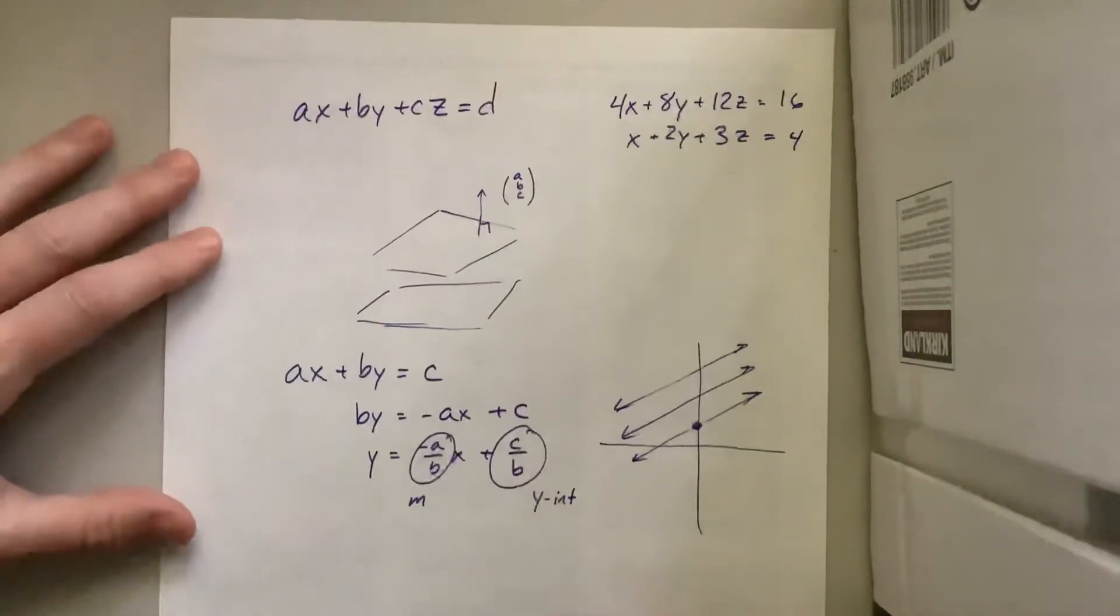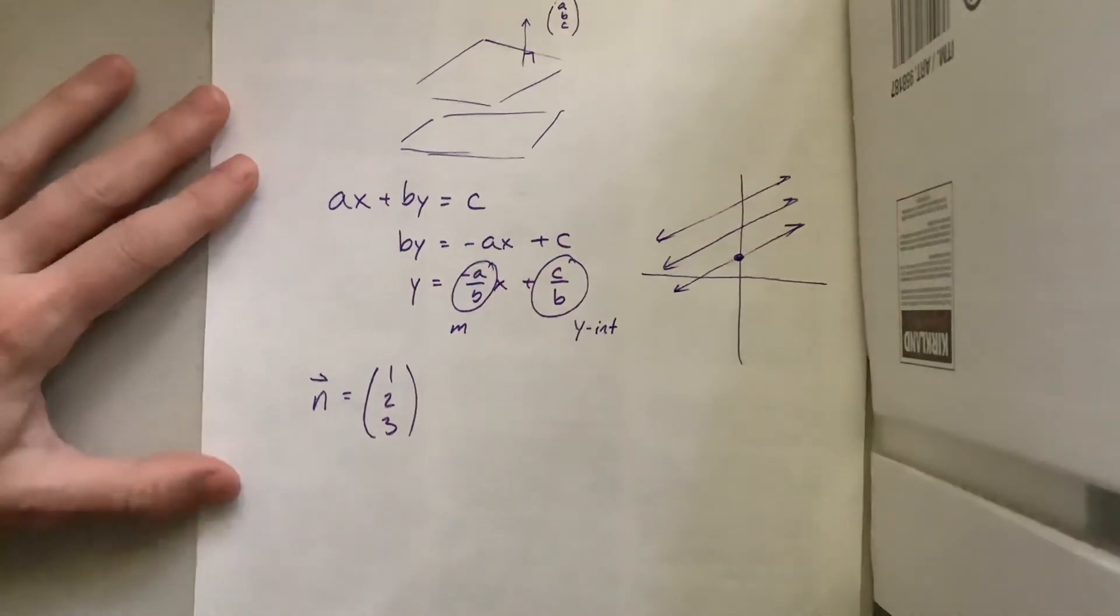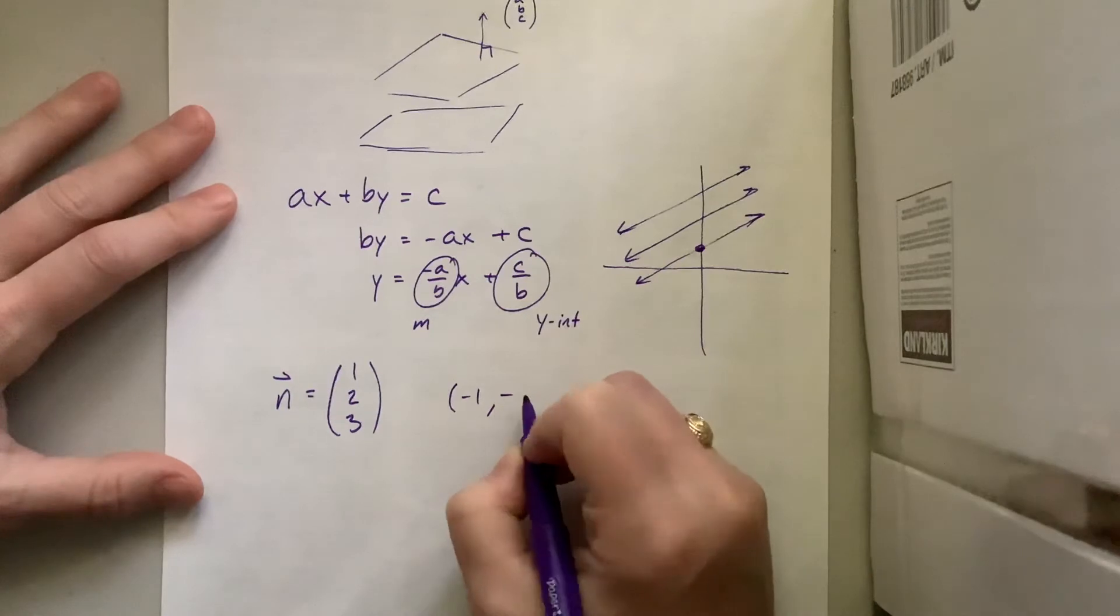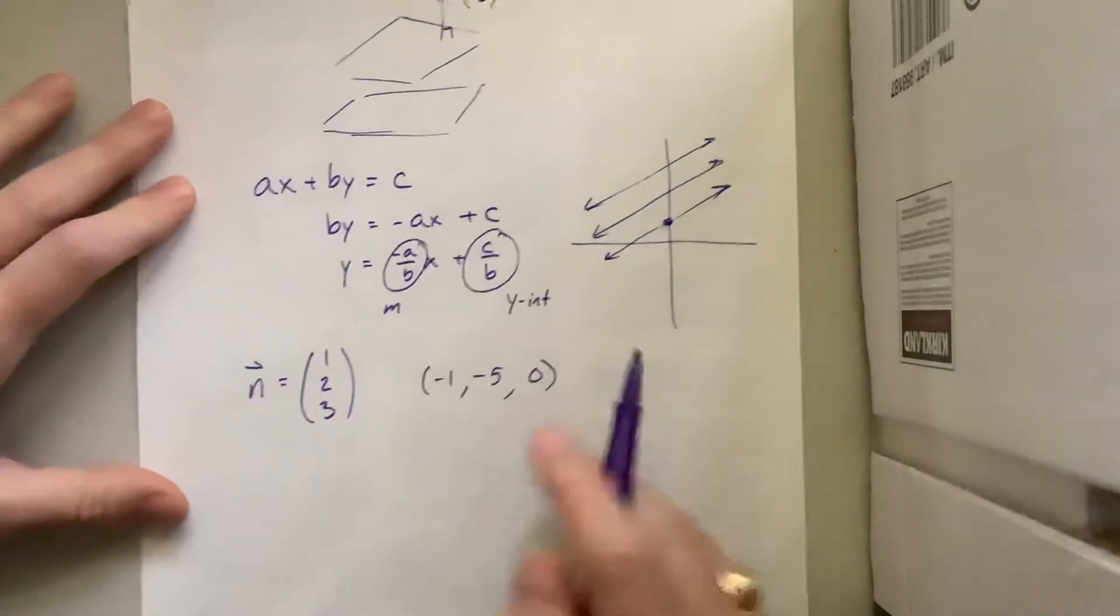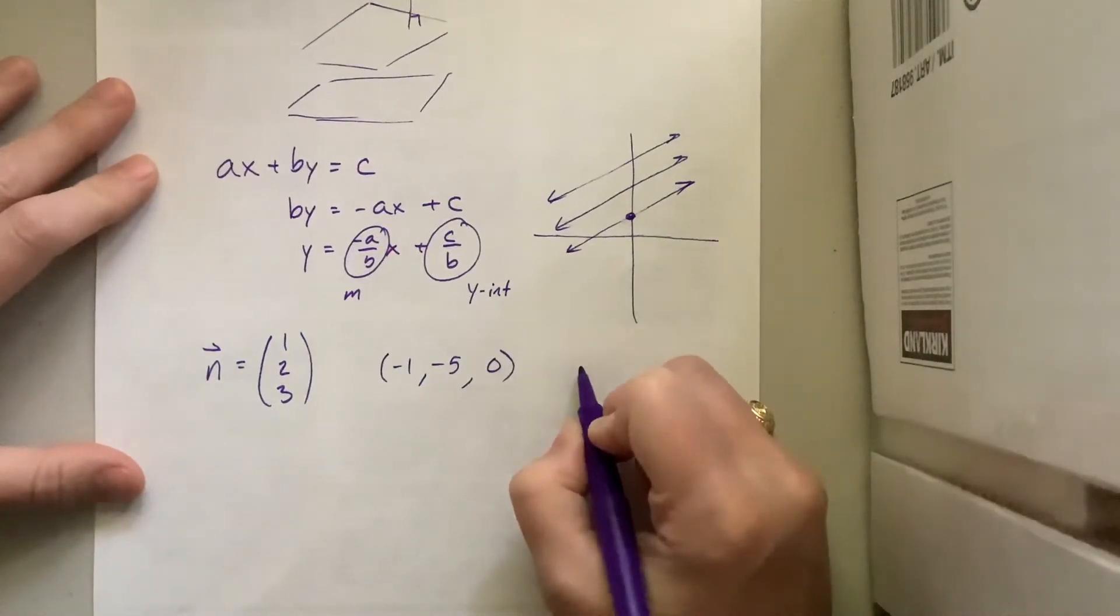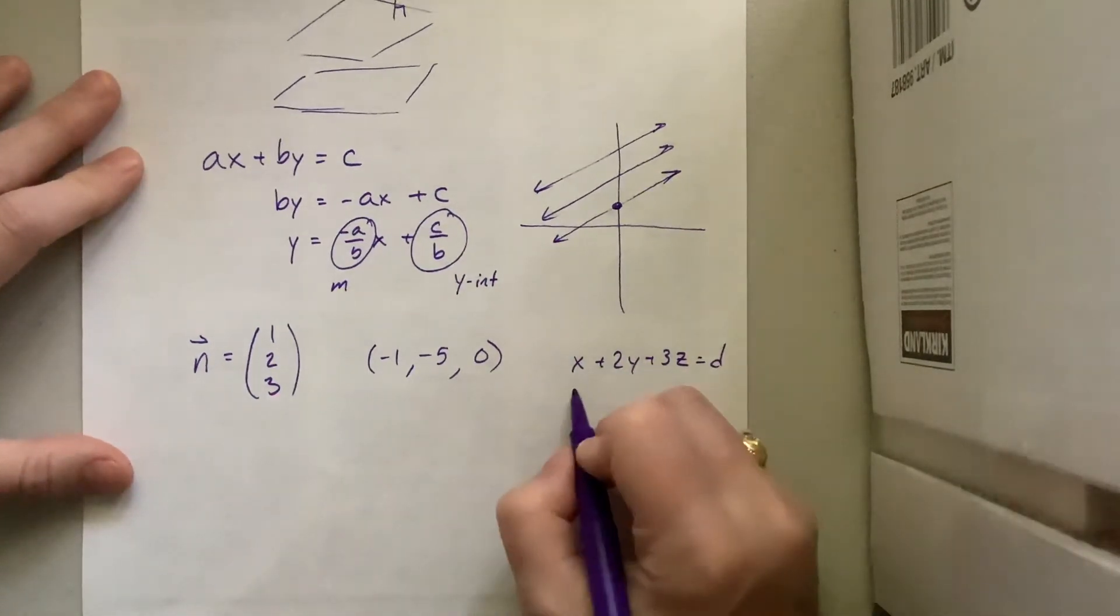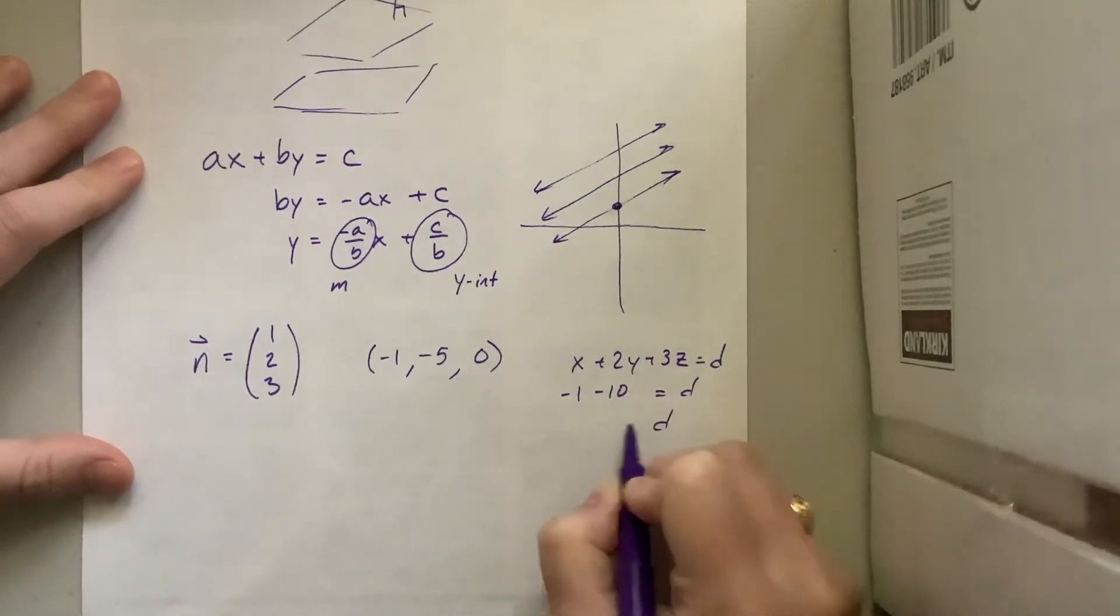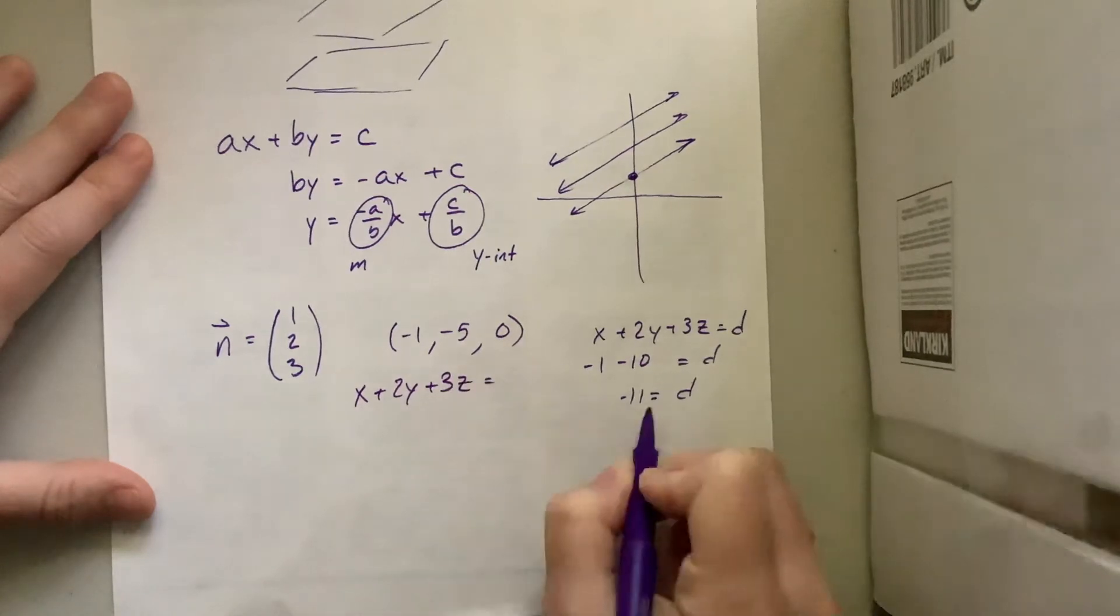That's why what we had here, like if I've got a normal vector to the plane 1, 2, 3, and then let's say I pass through the point negative 1, negative 5, 0. If I want to have this normal vector and it passes through this point, then what we said here was, it's X plus 2Y plus 3Z equals D, and then I plug in this point for X, Y, and Z. So it's negative 1 minus 10 equals D. So then our D value here is negative 11. So this plane becomes the plane X plus 2Y plus 3Z equals negative 11.